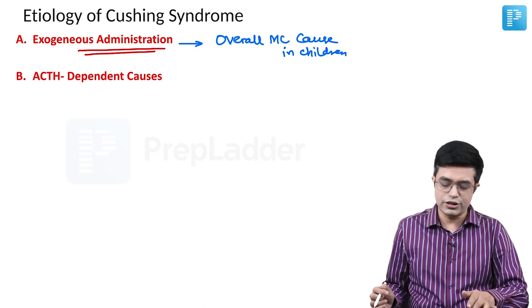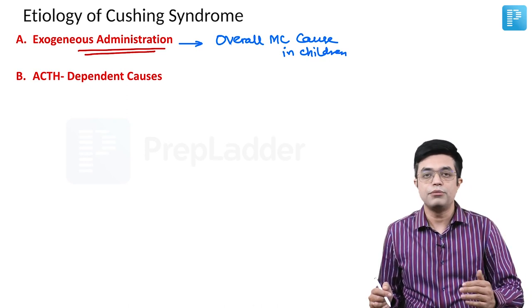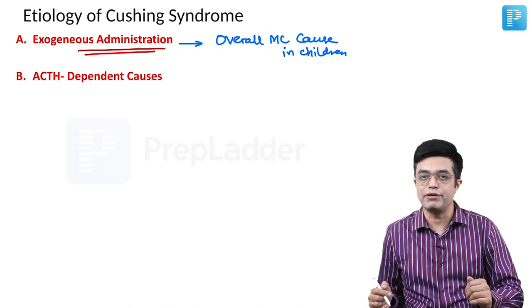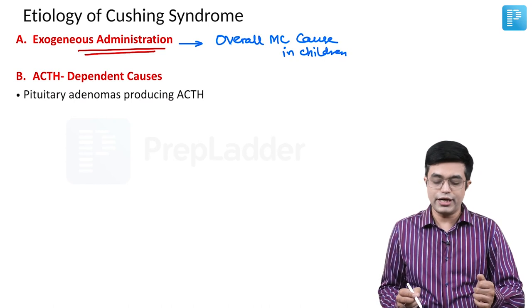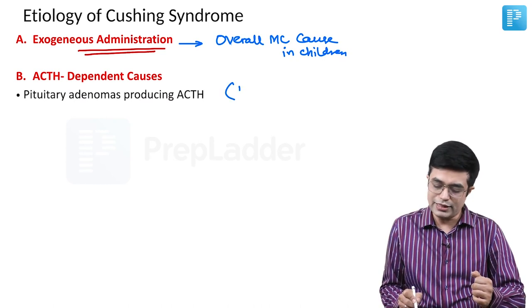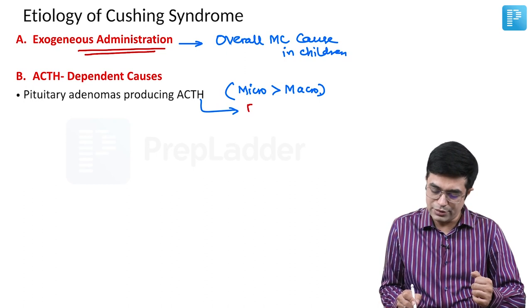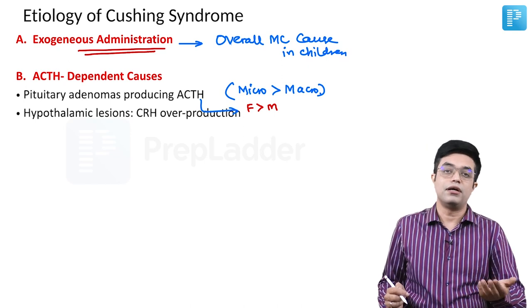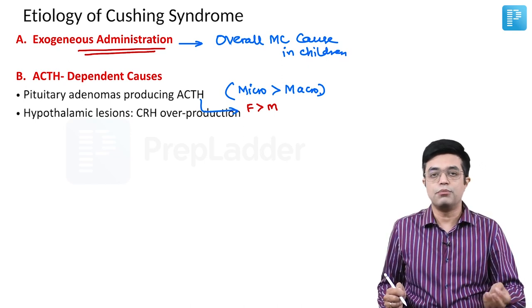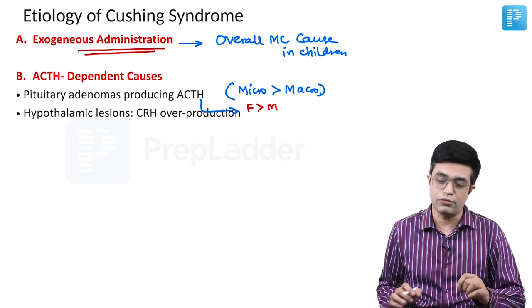The second category of causes are ACTH-dependent causes, where increased ACTH produces hyperfunctioning of the adrenal gland. Pituitary adenomas producing ACTH are common here — microadenomas are more common than macroadenomas, and pituitary adenomas are more common in females than males. Hypothalamic lesions producing excess CRH lead to more ACTH and thus more cortisol production.